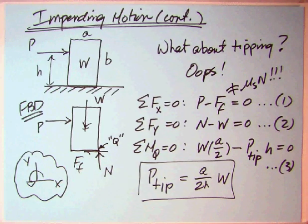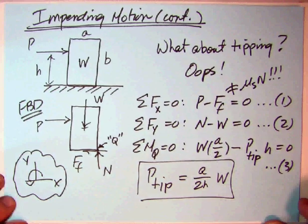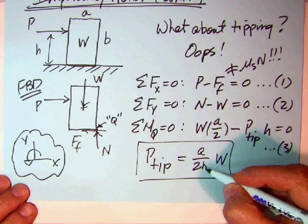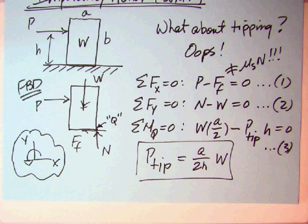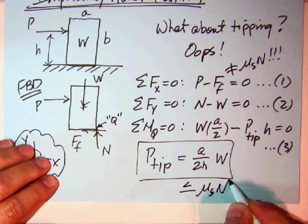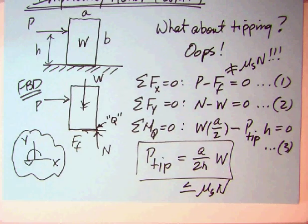Well, we can now solve for P_tip. If you do the algebra, then you get P_tip for this particular problem as A over 2H times W. Now, if you calculate that, you better find out that this is either less than or equal to mu_s*n. Of course, in this particular case, our n is equal to w. So what can we really say about this particular problem?